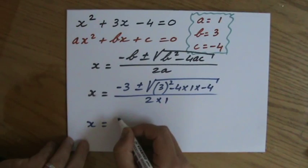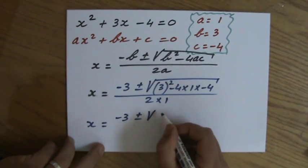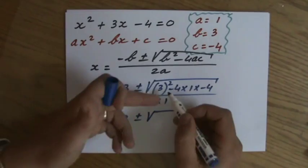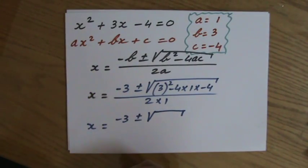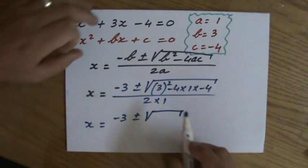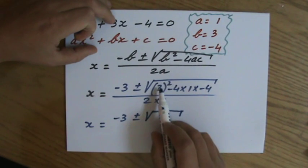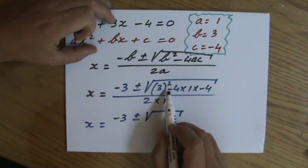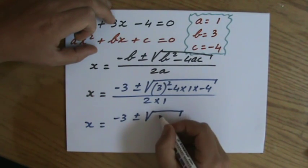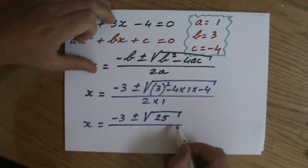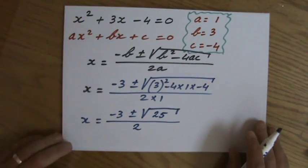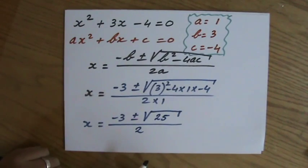So x is going to equal minus 3 plus or minus. Now perhaps you want to use a calculator to work that out. Excuse me, I'm coughing a lot today. That is 9 and minus 4 is 16, it's 25. Over 2. Hang on a minute, that's a beautiful square number isn't it? What is the square root of 25? Well, that is 5.